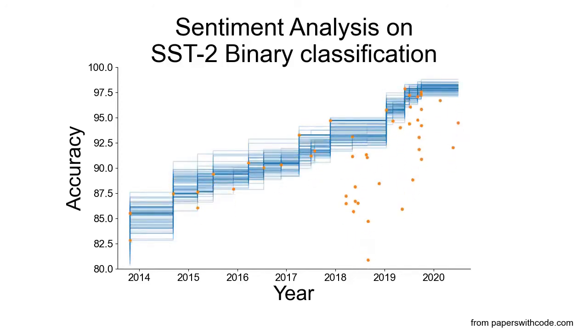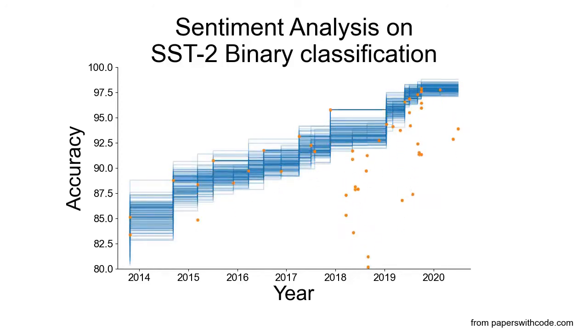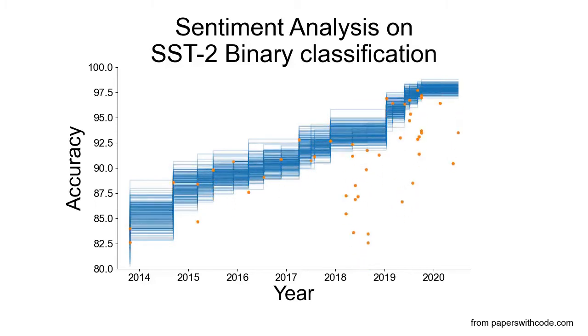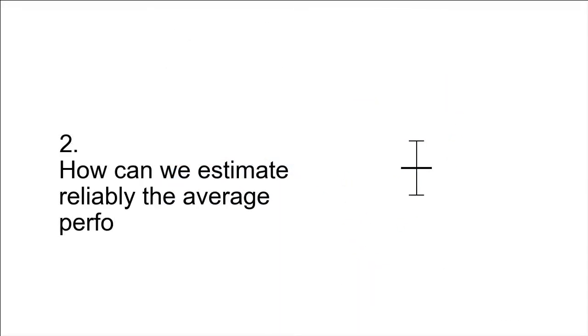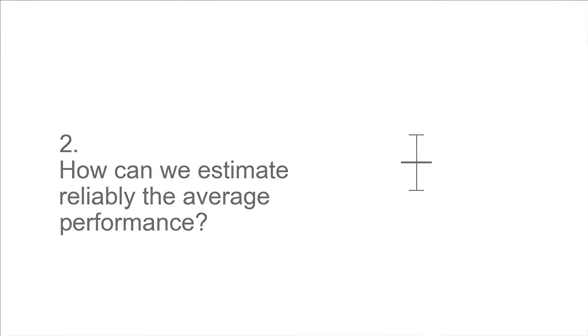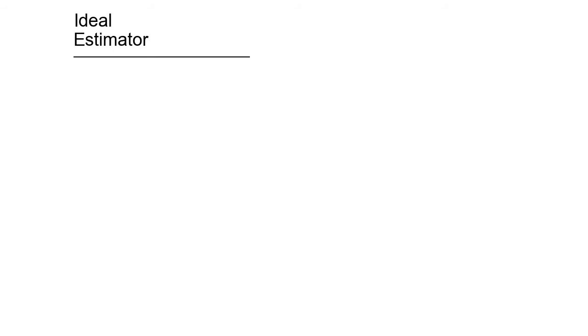The variance illustrated in this graph is based on our previous measures, adjusted as a function of the accuracy of different methods. It is large enough to be concerning — large enough to invalidate state-of-the-art results as well. Undoubtedly, we are making progress overall, but not all apparent improvements may be relevant. Question 2: How can we estimate reliably the average performance? Ideally, we should randomize all sources of variation, including hyperparameter optimization.